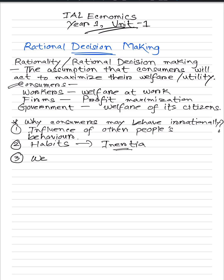The third and last point is weakness at computation. This means that the consumer is not able to compute the amount of welfare they would gain by behaving rationally. They are not aware of the monetary or quantitative benefit they would receive if they changed their behavior, so they are weak at computing their benefit and therefore behave irrationally. This is basically it for this chapter.